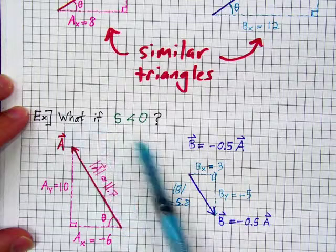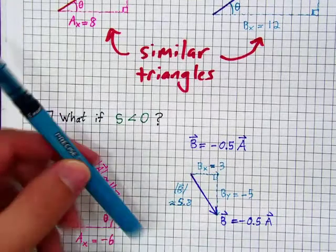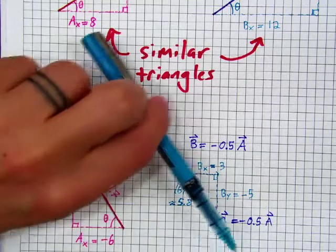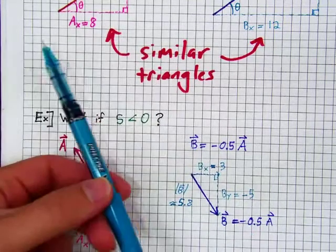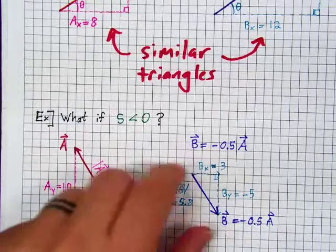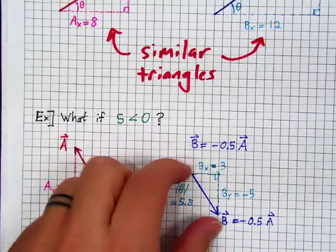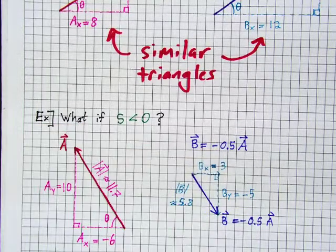And we see what's happened to a. By multiplying it by a negative scalar, we have flipped it. Multiplying by a negative number flips the direction of your vector. And also rescales it. So, the 0.5 has rescaled it, has shrunken it, but the negative has flipped it.